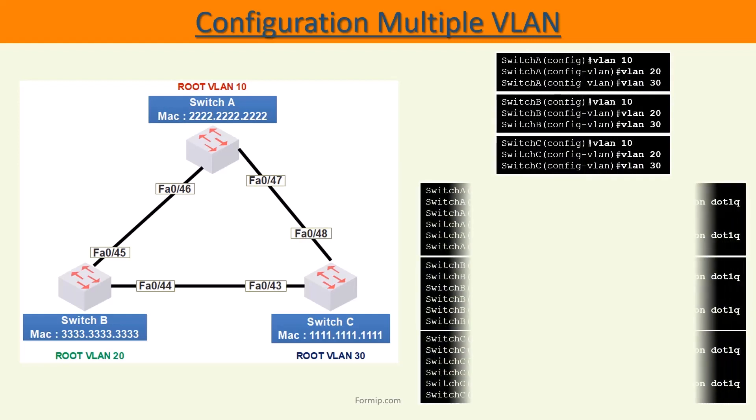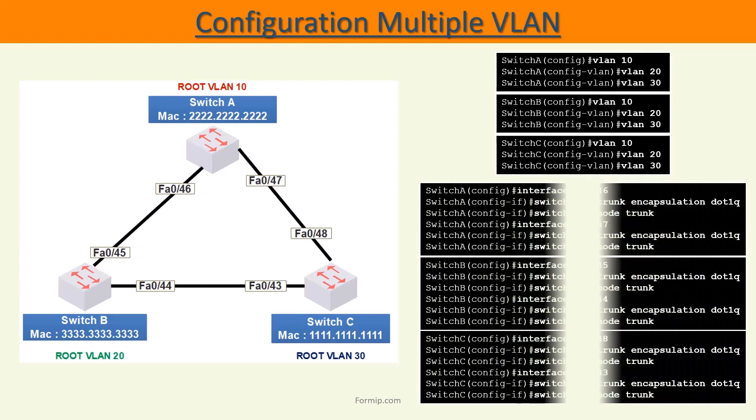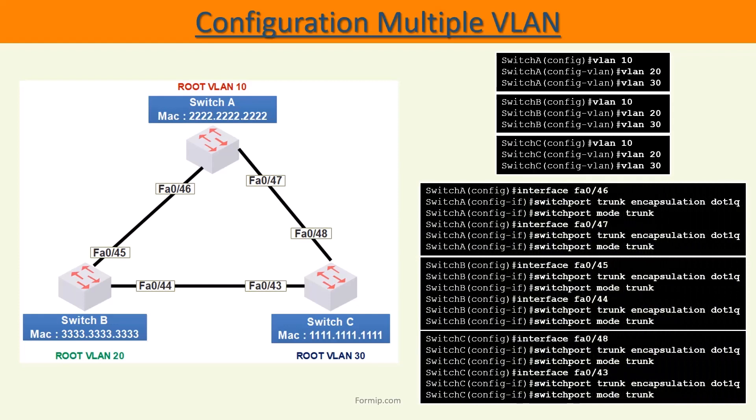As by default all the ports of a switch are in access mode, we will create the trunks between the switches. We choose 802.1Q encapsulation and put the port in trunk mode on all the interfaces that connect a switch.